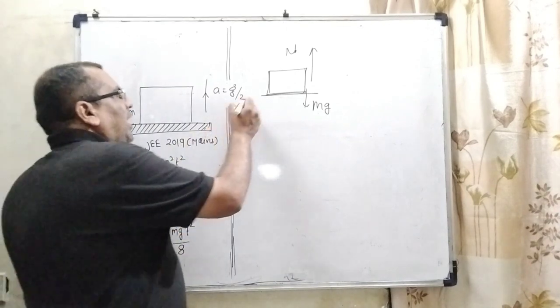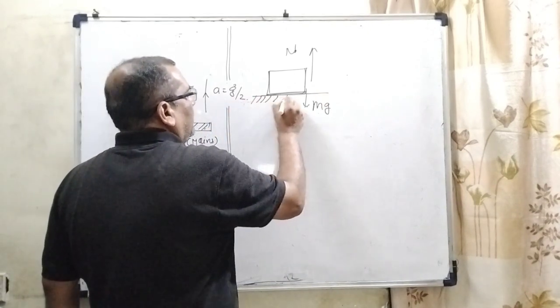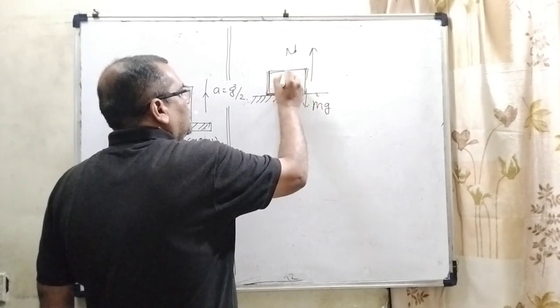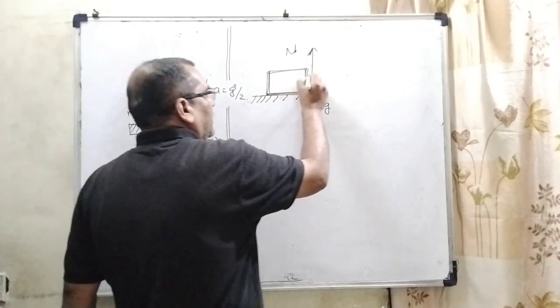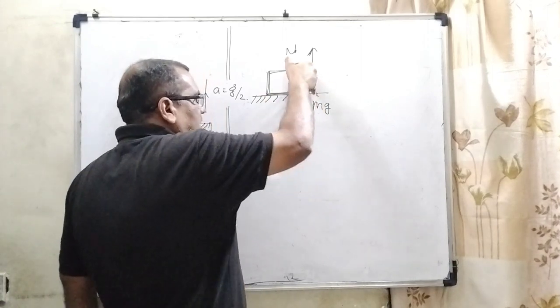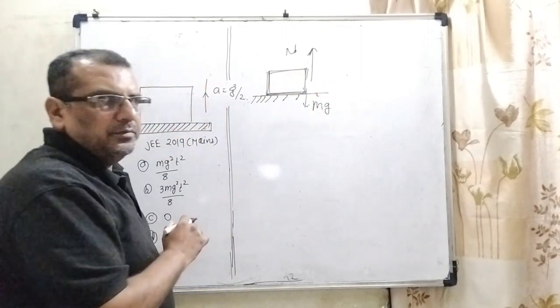Here we have a platform and the block. This block is going in the upward direction. Let us first draw the free body diagram. We can see that mg acts in the downward direction, and therefore normal reaction acts in the upward direction.